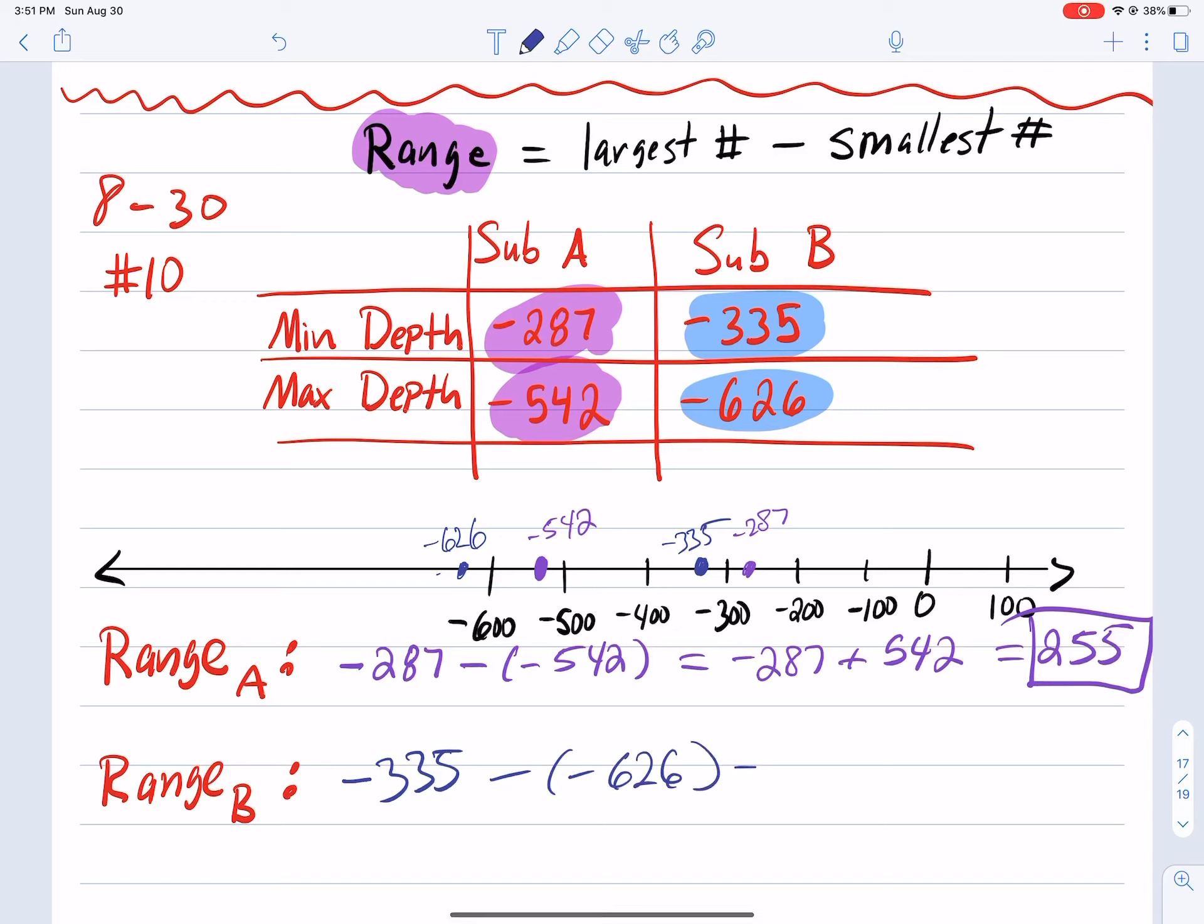Again, that's the definition of range. This becomes negative 335 add the opposite. So let's find out what the answer is. Negative 335 plus 626.